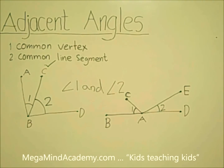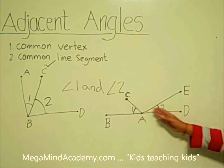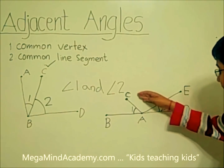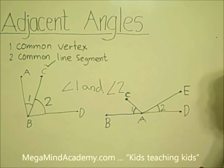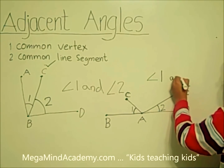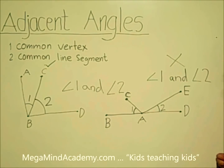Now, are angle 1 and angle 2 adjacent? Let's see. Do they have a common vertex? Yes, they have a common vertex, vertex A. Vertex A is the common vertex between angle 1 and angle 2. Now, let's look at the second property. Do they have a common line segment? No, they do not have a common line segment, because line segment CA and line segment EA are both there — there are two line segments, not one. So, angle 1 and angle 2 are not adjacent angles.